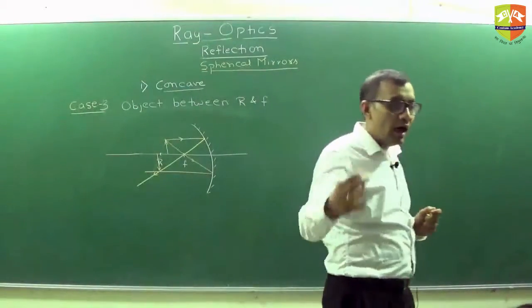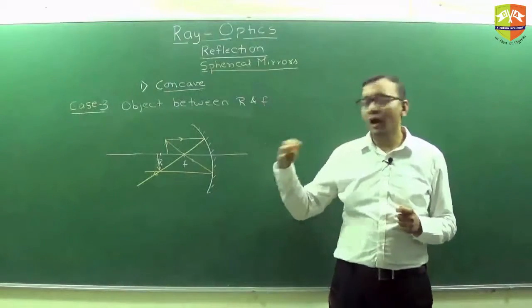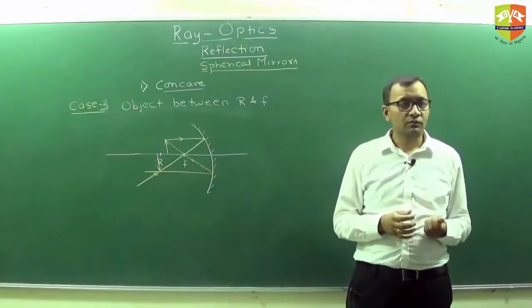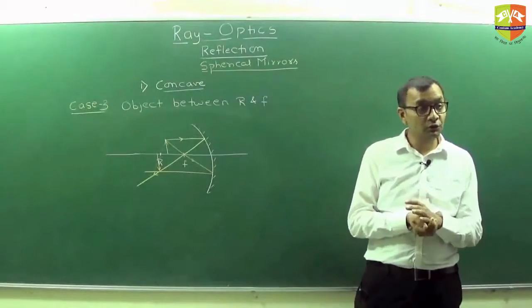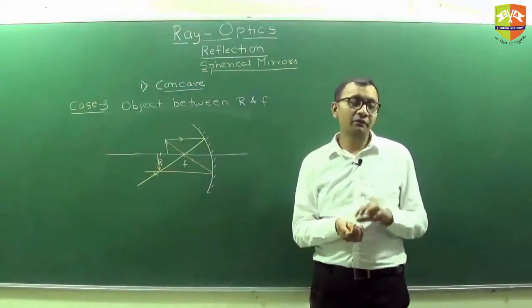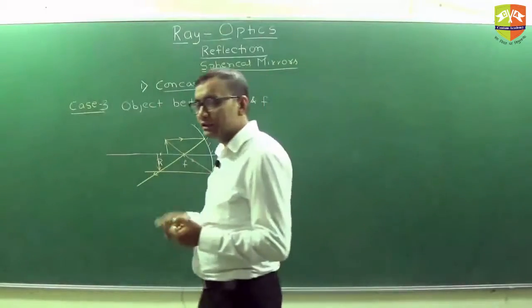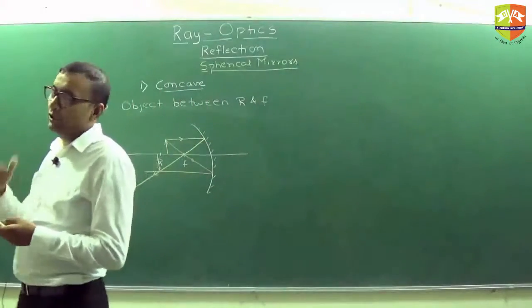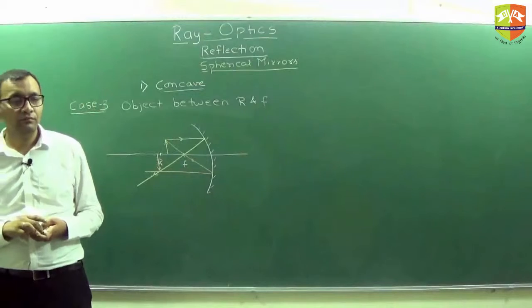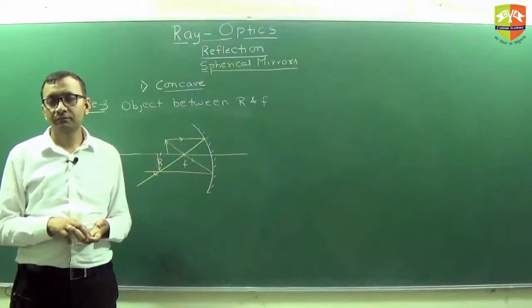So what kind of image you get beyond R? The image is beyond R now and it will be enlarged also, and inverted. Write down characteristic: inverted, enlarged, real and beyond R.